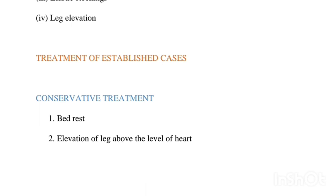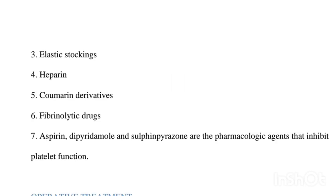Now let's talk about the treatment. Conservative treatment: bed rest is indicated for about 7 days after the diagnosis is established. Elevation of legs above the level of the heart decreases the pressure in the veins. When walking is started, an elastic stocking should be used. Heparin drugs prevent thrombus formation by inhibiting the formation of thromboplastin and also act as an anti-thrombin. Coumarin derivatives interfere with four factors in the clotting mechanism. Fibrinolytic drugs and pharmacological agents that inhibit platelet functions are also used.